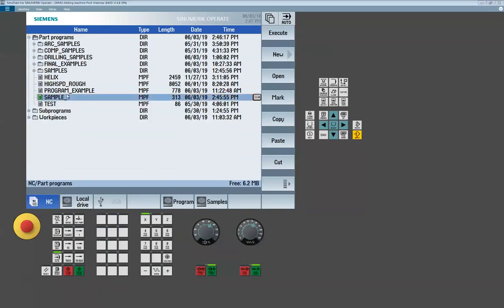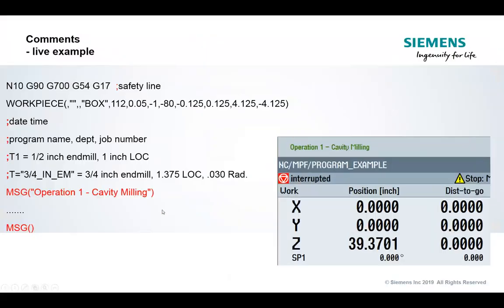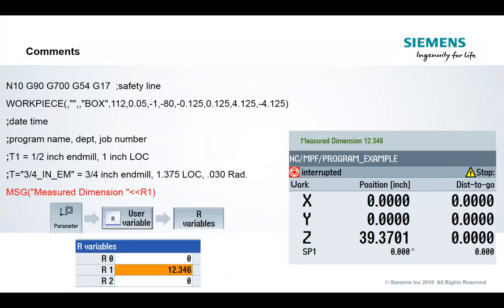One thing that's pretty cool about the message command that a lot of guys don't realize is you can also push variables into it. If you had a probing routine that wrote to a variable — in this case we're using one of our R variables — you can display any system variables inside the message command. It's done by concatenating the variable using two less-than symbols (<<) followed by the variable name outside of the quoted text. Whatever the variable resolves to will display in the message command.